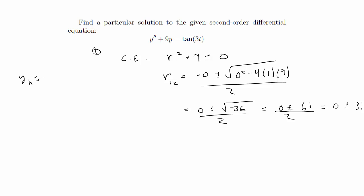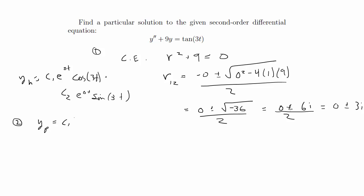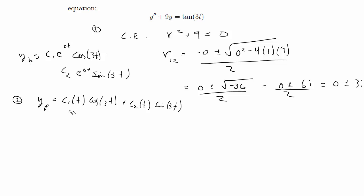The homogeneous solution is c1·e^(0t)·cos(3t) plus c2·e^(0t)·sin(3t), where alpha is 0 and beta is 3. That first part is done. To use variation of parameters to get the particular solution, we treat those constants as functions, so yp equals c1(t)·cos(3t) plus c2(t)·sin(3t), and we need to find c1 and c2.